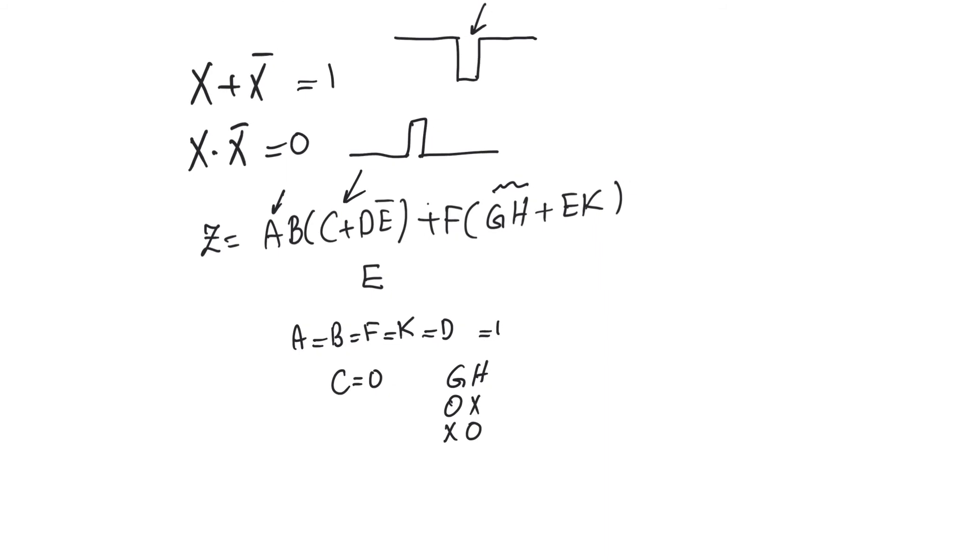In that case, if we have all of these values for all of the other variables, then Z is going to be equal to E bar plus E. So because we have E bar plus E, we obviously have a static 1 hazard. Because the output of Z in this case, under these conditions for these variables, the value of Z is expected to be 1 all the time. However, it will glitch because there will be differential delay between E and E bar.